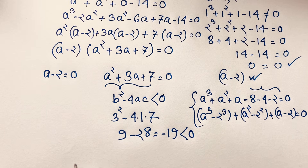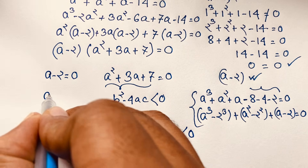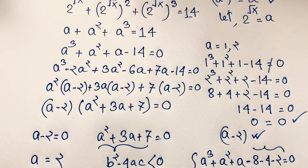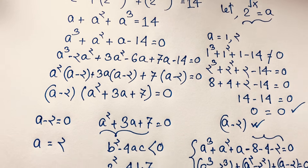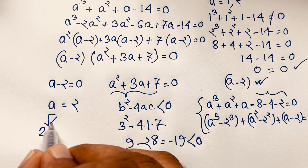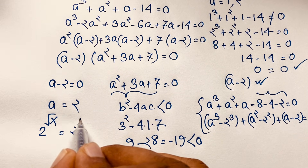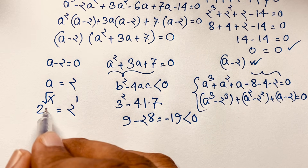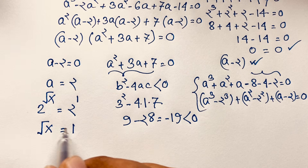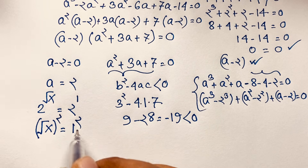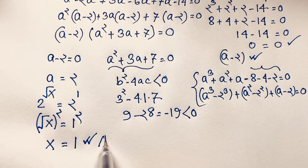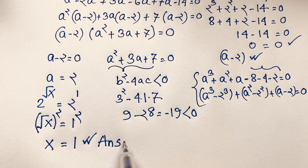From the first case, a minus 2 equals 0, so a equals 2. Recalling that we let a equal 2 to the power square root x, substituting back gives 2 to the power square root x equals 2, which equals 2 to the power 1. Since the bases are the same, the exponents must be equal: square root x equals 1. Squaring both sides, x equals 1. This is our final answer.